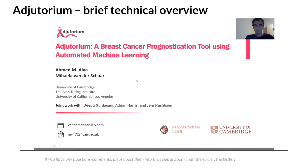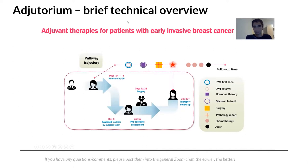Adjutorium is for early breast cancer patients who underwent surgery. Typically, a woman is diagnosed through routine screening — mammogram, MRI, or ultrasound followed by biopsy confirming diagnosis. The patient then undergoes surgery to remove the tumor. Afterwards, we need to decide which adjuvant therapy to give. Multiple options exist; in this study we consider chemotherapy and hormone therapy. That's when Adjutorium becomes relevant for clinical decision-making.